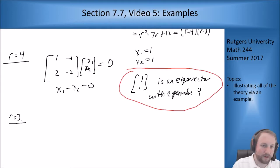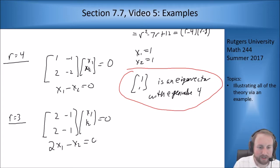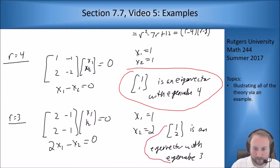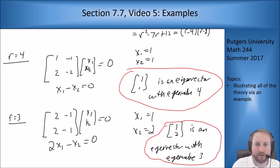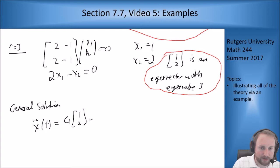Now for r equals 3, I end up with [[2, -1], [2, -1]] times [x1, x2] equals 0. Again only one equation: 2x1 minus x2 equals 0. Setting x1 to be 1 gives x2 equals 2, so [1, 2] is an eigenvector with eigenvalue 3. My general solution is then x(t) = c1 [1,2] e^(3t) + c2 [1,1] e^(4t).